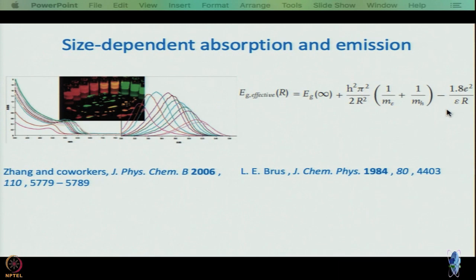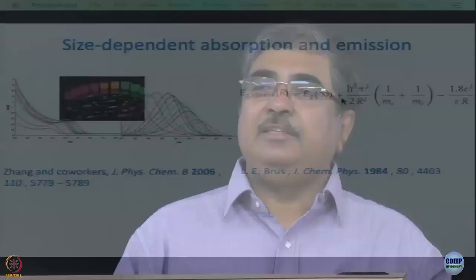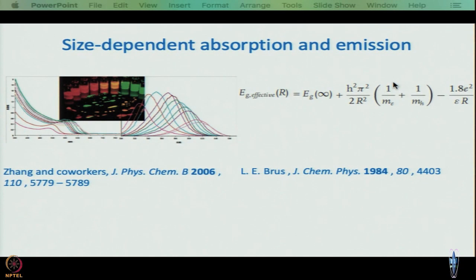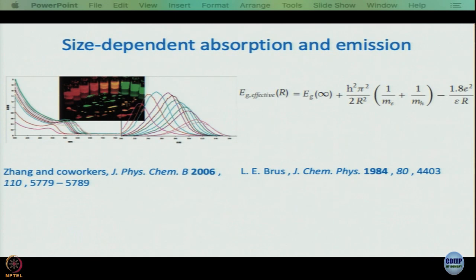The effective band gap for a nanoparticle of radius R is given by: Eg(eff) = Eg(∞) + (ħ²π²/2R²)(1/mₑ + 1/mₕ) − 1.8e²/εR, where Eg(∞) is the bulk band gap, the second term is the particle-in-a-box confinement energy involving the effective masses of electron and hole, and the third term is an additional Coulomb correction beyond the simple particle-in-a-box model.